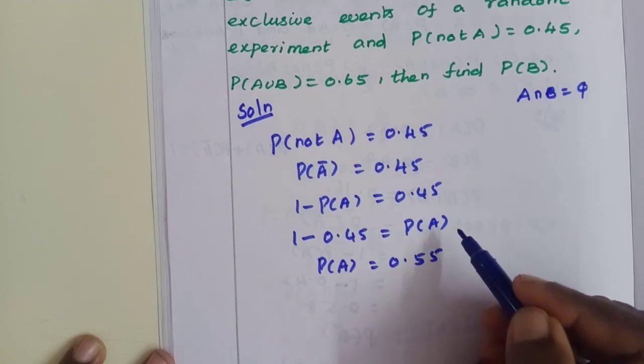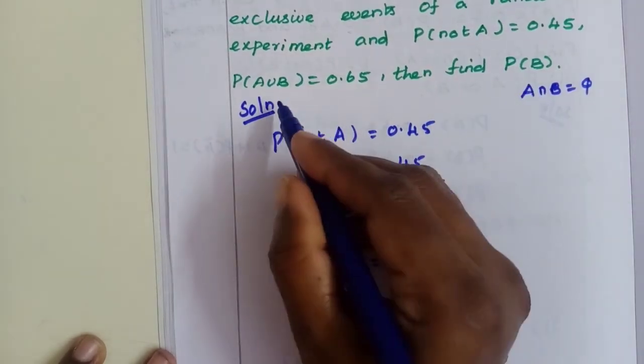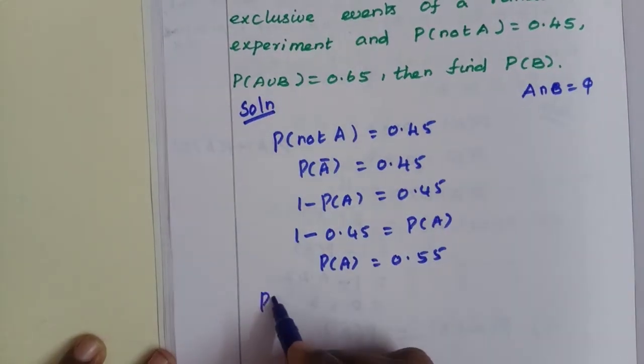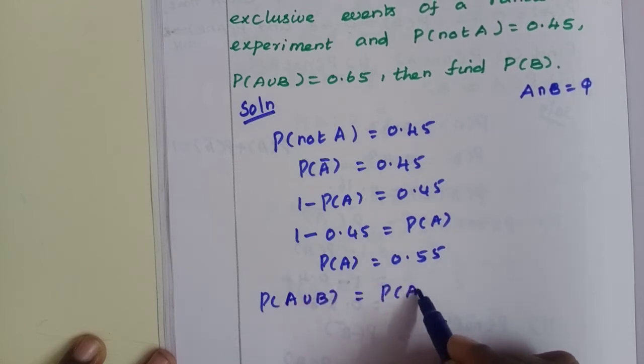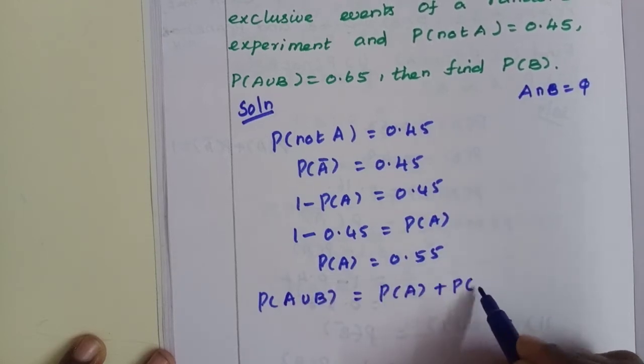Now, P(B). For A union B, P(A union B) equals P(A) plus P(B).